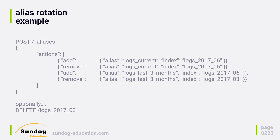Optionally, as old data falls off those aliases, you could delete those indices to free up space in your cluster and keep your server capacity needs manageable and relatively constant. You may want to back them up to a snapshot first — we'll talk about that in a few lectures. But this is the basic idea of alias rotation and how you can use multiple indices to add capacity and new data without having to re-index things all the time. It's a very powerful idea.